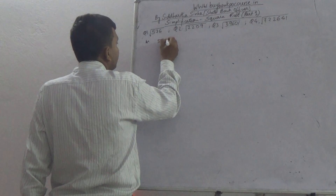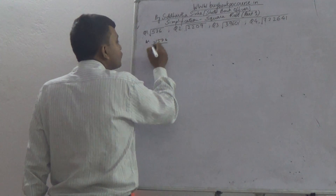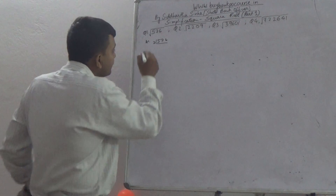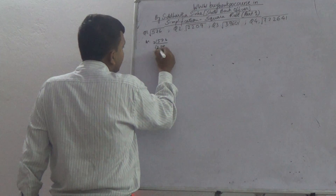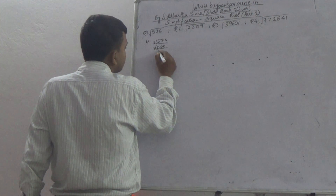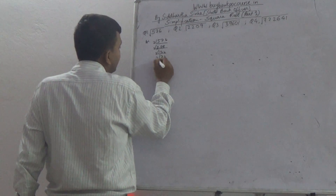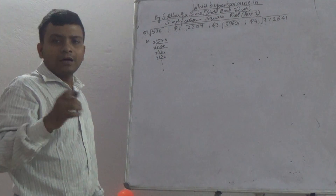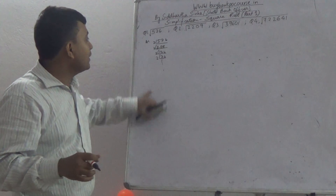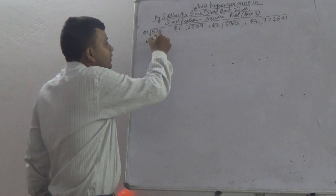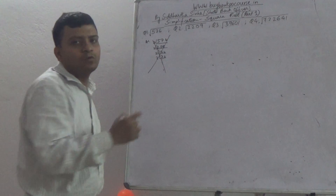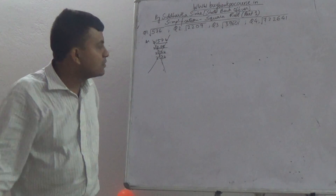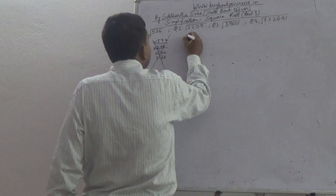The given number is 576. We used to solve in the traditional way, that is known as the factorization method. In the factorization method, we solve until the value comes to 1. But this is not an efficient way of solving the question. We are here to learn a shortcut.